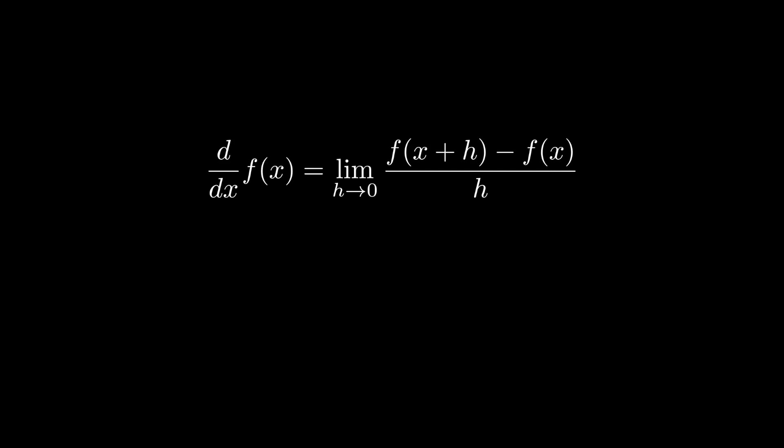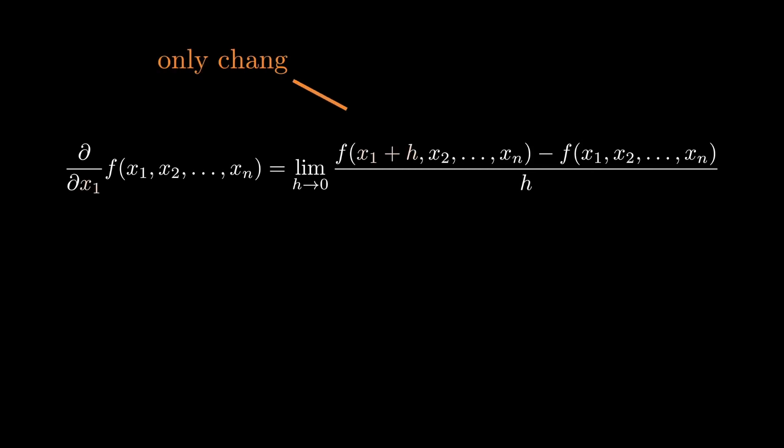For the scalar case, we define the derivative as the limit of the difference quotient. The partial derivative is defined very similarly. We fix all of the arguments to the function except for one, and then we compute the limit of the difference quotient of that one argument.